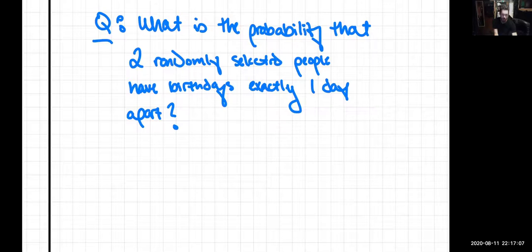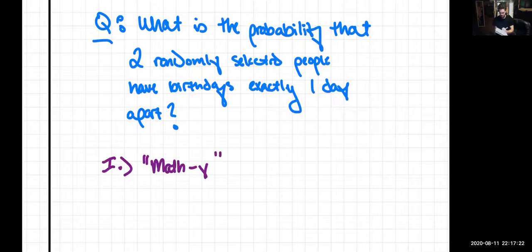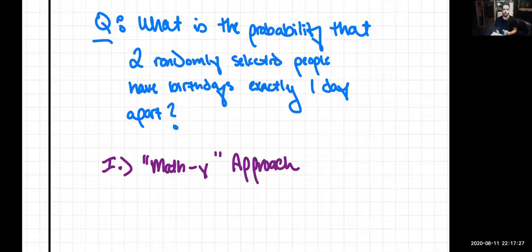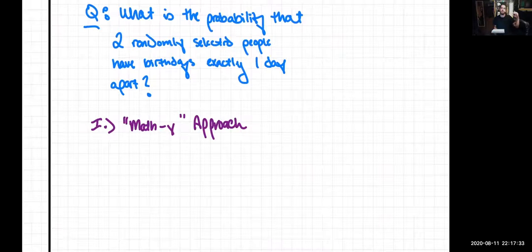So let's think about the first method. I'm going to start with the more rigorous approach, the mathy approach, really thinking about some combinatorics. Now the easiest way to approach this is let's fix the birthday of one of these people. The first thing we have to answer is how many different arrangements are there for a single person's birthday?